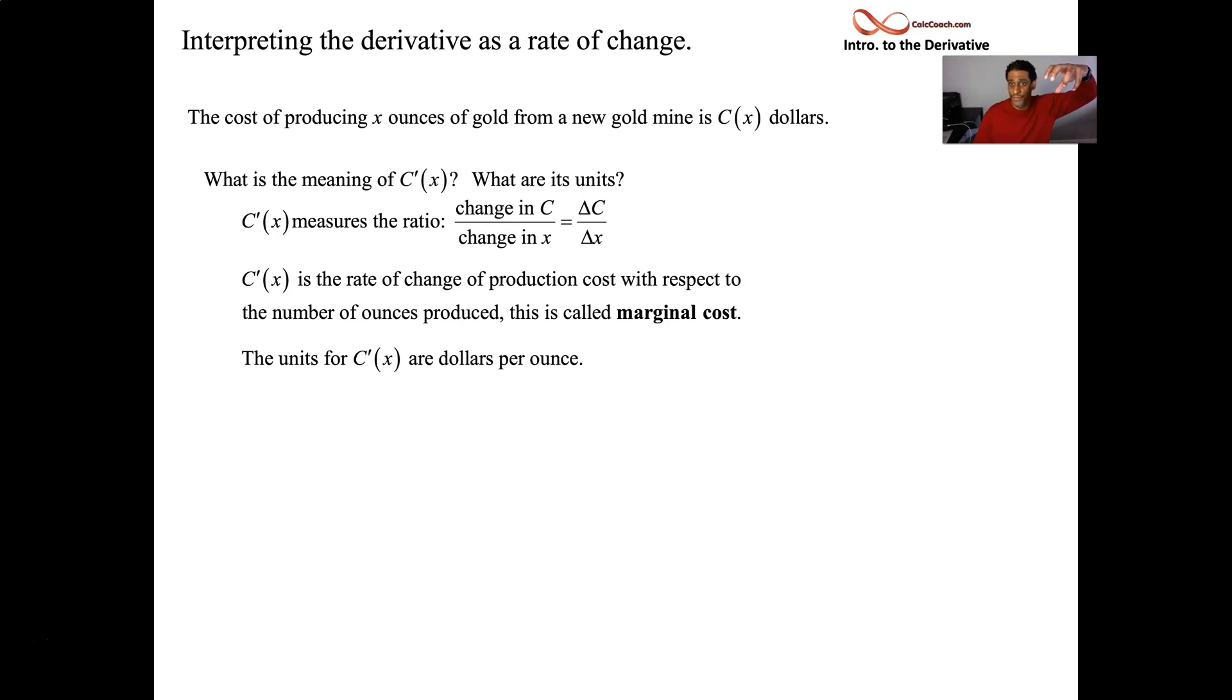The units for it, well, cost is in dollars, X is in ounces, so dollars per ounce is the unit measurement. So if somebody gives you a number and says, C prime of 800 equals 17, how do you interpret those symbols in the context of the problem? The rate of change of the cost when the number of ounces produced is 800, that's equal to the number 17, the units dollars per ounce.